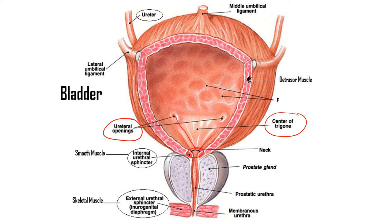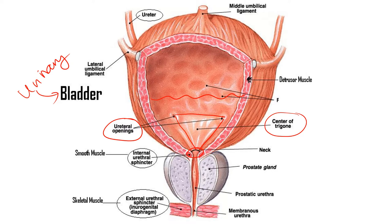We can draw a triangle between those three areas to create what's called a trigone. This is important because it's an area where urinary bladder infections or UTIs may reside, as urine collects at the bottom of the bladder, giving that area the most constant contact with toxins. We say urinary bladder rather than just bladder to distinguish it from the gallbladder. The bladder has the same setup: an internal lining of transitional epithelial tissue, a muscular layer, and a fibrous adventitia layer covering the outside surface.